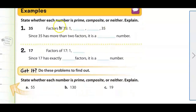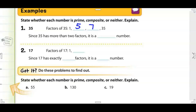Let's look at some examples. State whether each number is prime, composite, or neither, and explain. For 35: we know one times 35 equals 35, but it ends with five, which by our divisibility rules means it is a multiple of five. So the factors of 35 are 1, 5, 7, and 35 — because five times seven equals 35. Since it has more than two factors, this is a composite number.